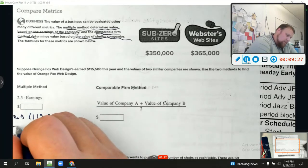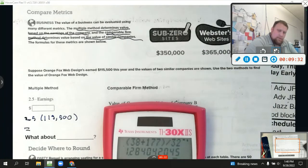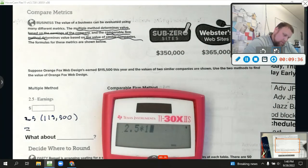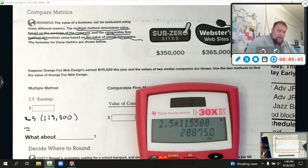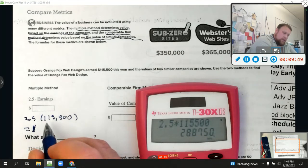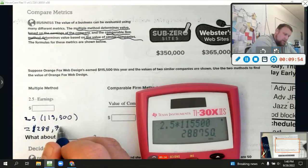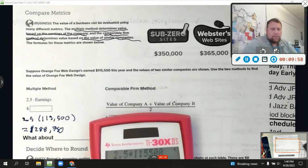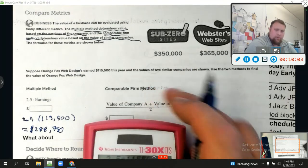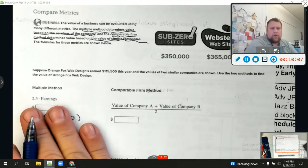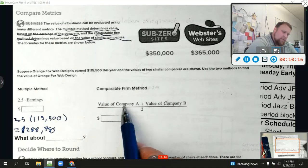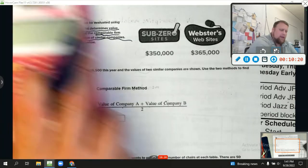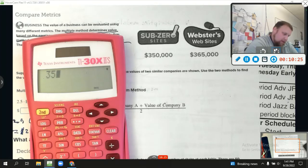Now, similar companies are in the mid 300,000 value. So let's use this comparable firm method. This is where we're going to look at other firms. Let's say we're not sure what the earnings are, but we know other firms that are doing similar type business. What are their values? So what we do here is it says to take the value of company A and B, add them together, and then divide by 2. So we're just averaging their values. So in this case, I'm going to add 350,000 plus 365,000, and then divide that by 2. So that's $357,500. I should write that down. So that was 350,000 plus $365,000 divided by 2. What did that equal? That equaled $357,500.